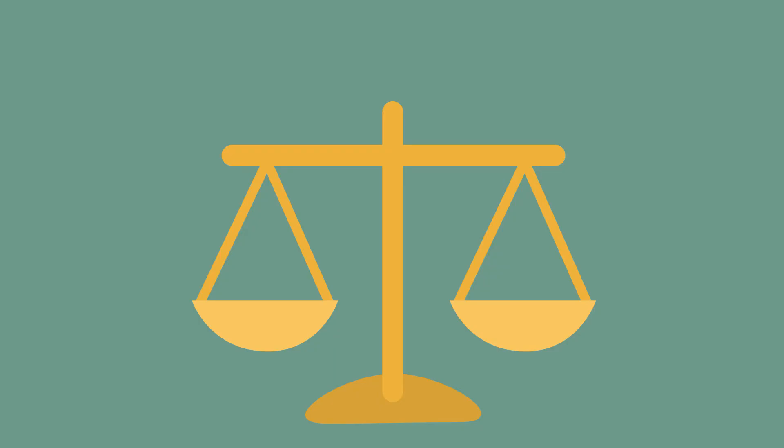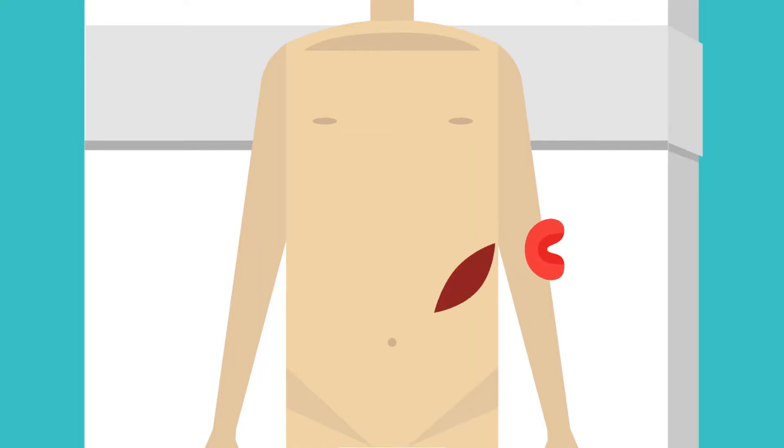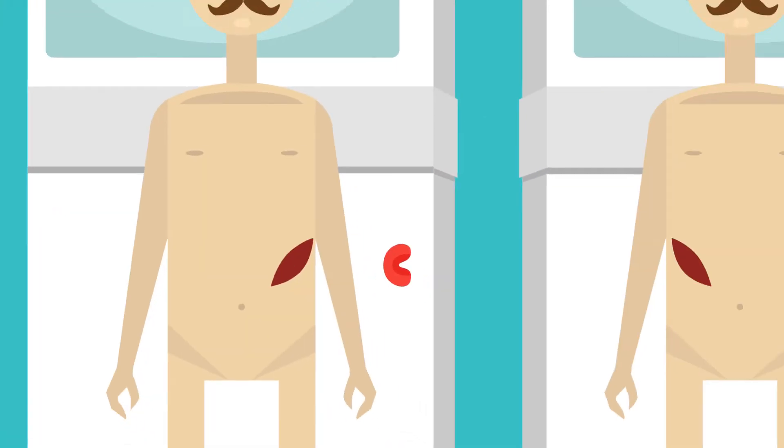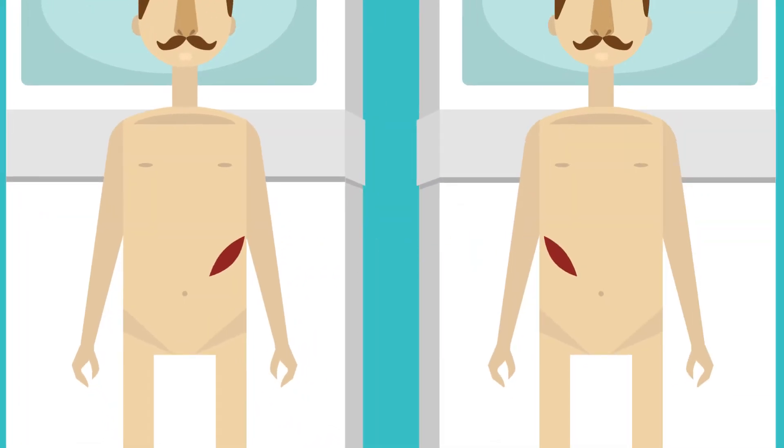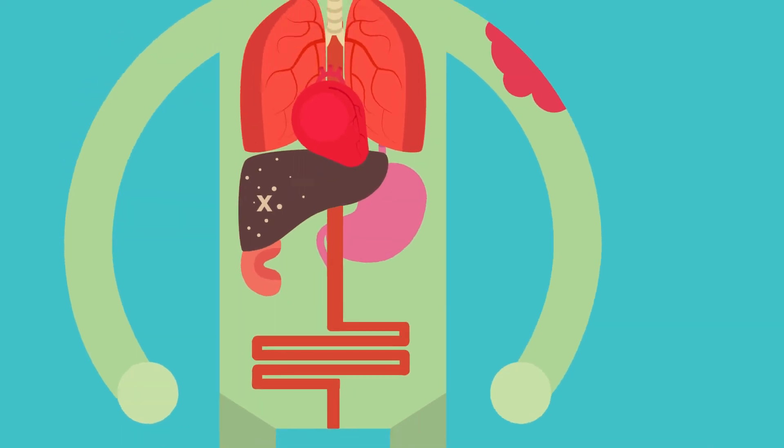In this video we're going to learn about organ transplants and the ethics. Did you know that the first ever organ transplant was a kidney transplant in 1954, in fact it was between two identical twins. An organ transplant is the replacement of a damaged or missing organ by a working and healthy organ.